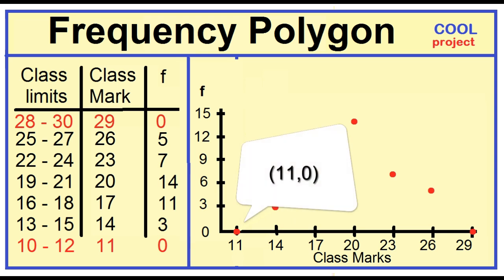For example, when the class mark is 11, the frequency is 0. Mark the dot at 11, 0. Next is 14, 3. 17, 11.